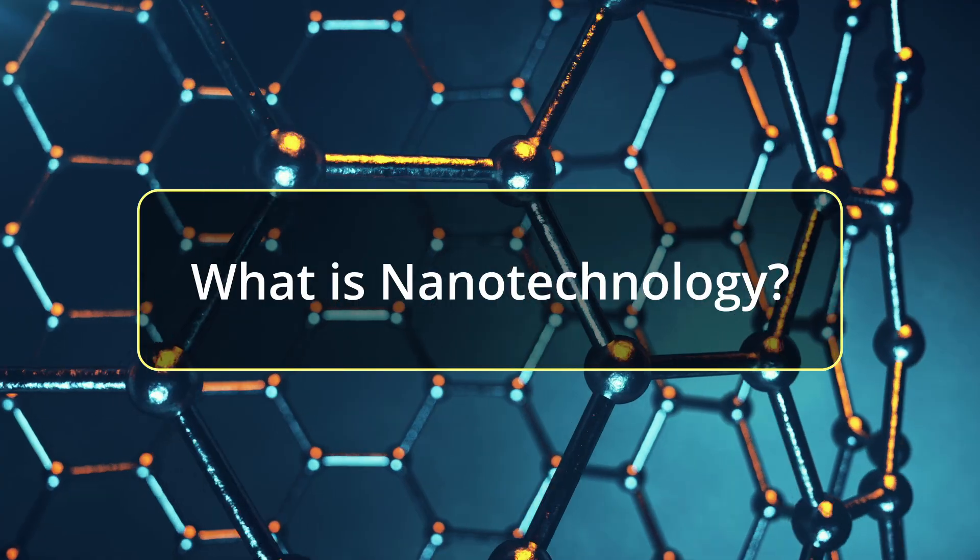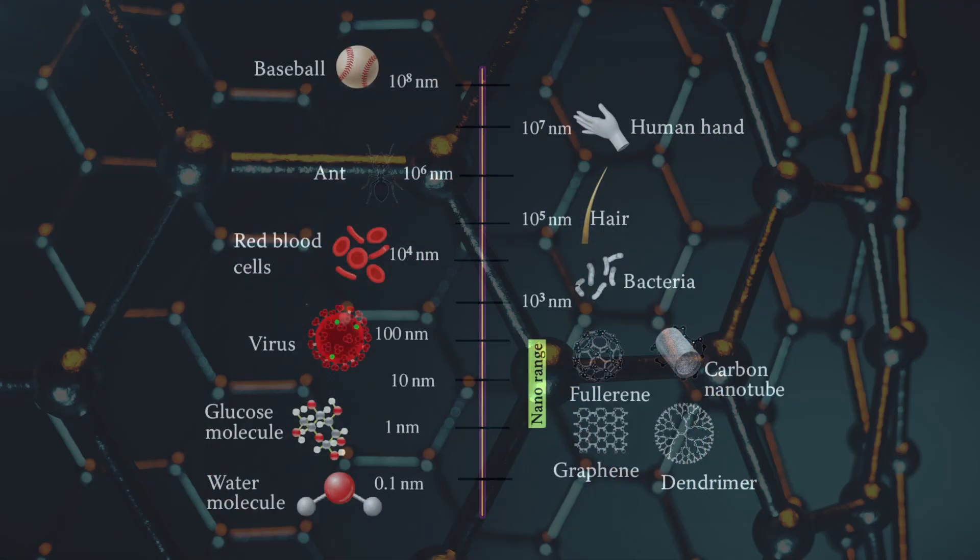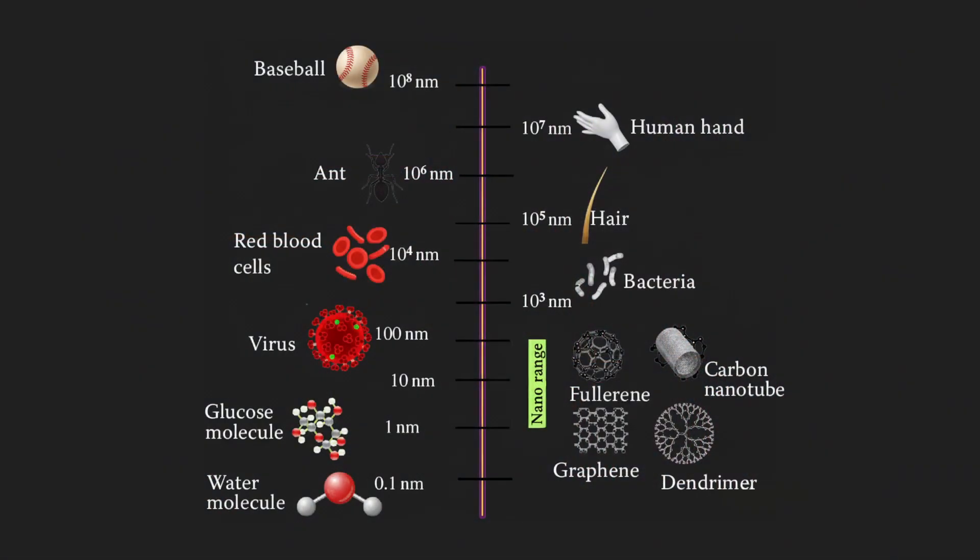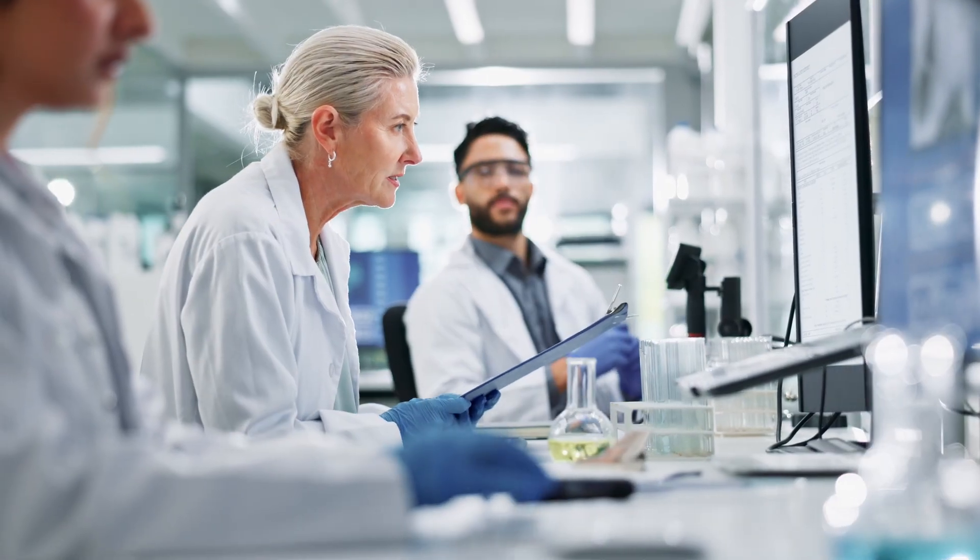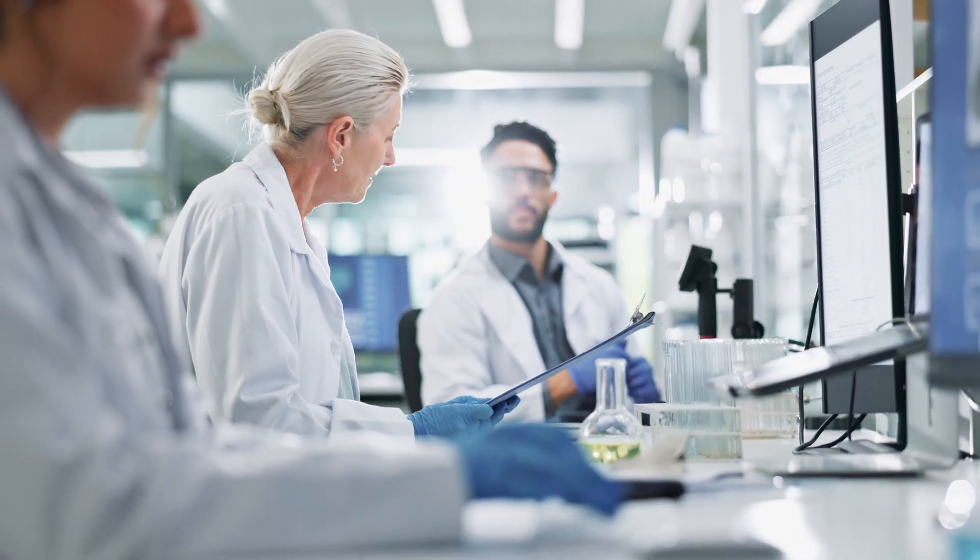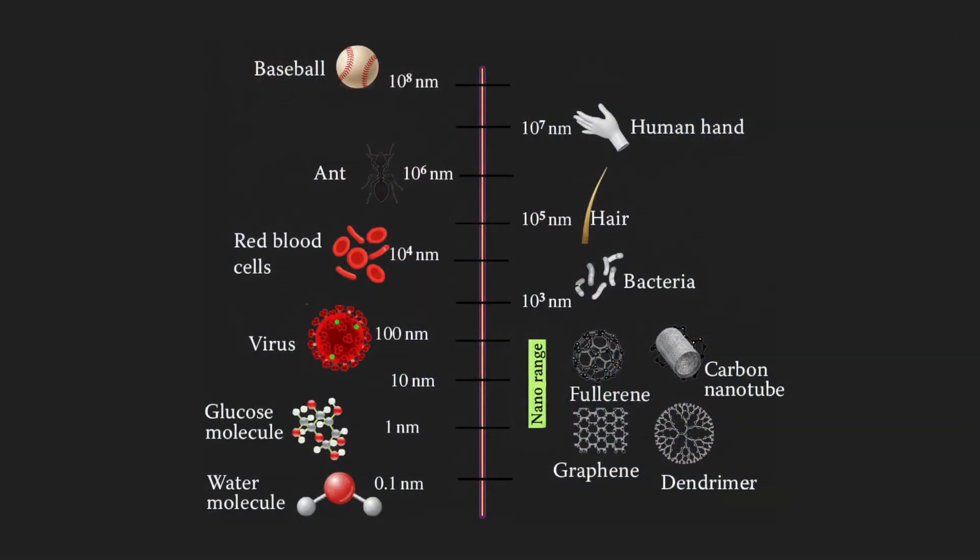To understand nanotechnology, we have to shrink down. Way down. A nanometer is a billionth of a meter. To give you an idea, a human hair is about 75,000 to 100,000 nanometers wide. A DNA molecule is about 2 nanometers in diameter, and a single hydrogen atom is about a quarter of a nanometer. Nanotechnology is the science and engineering that deals with manipulating matter on this incredibly small scale, typically between 1 and 100 nanometers.